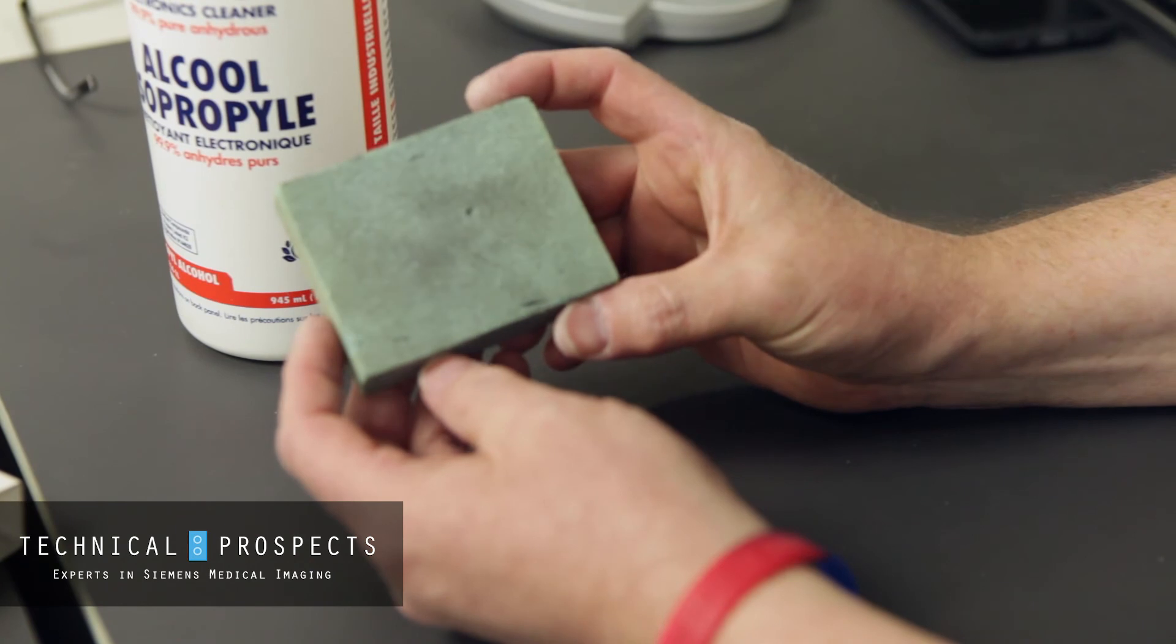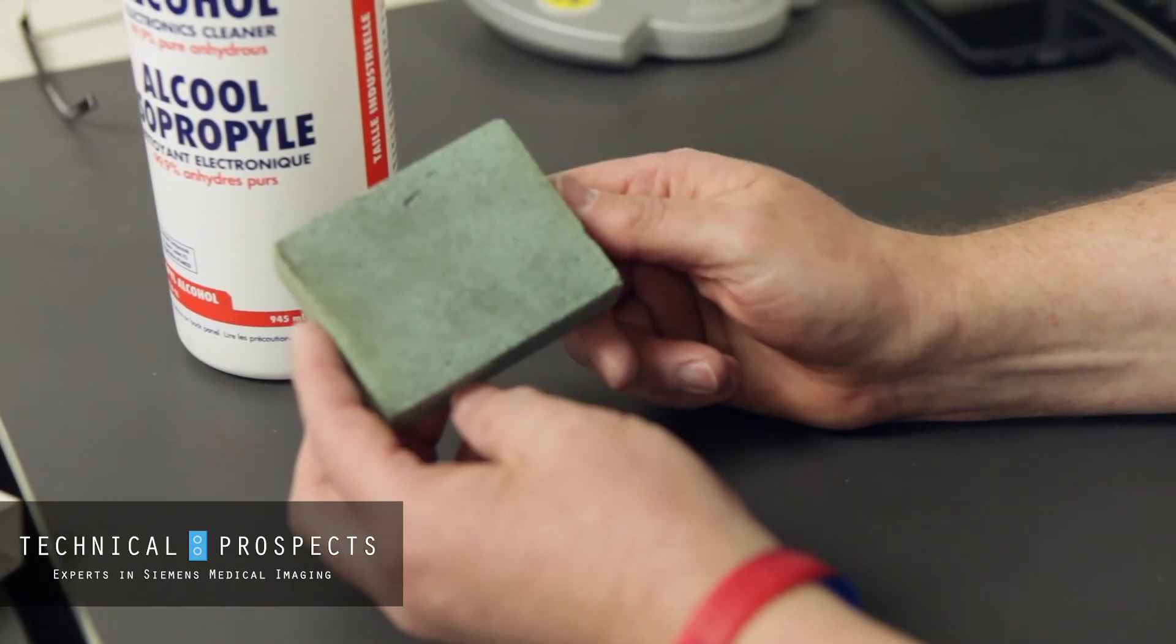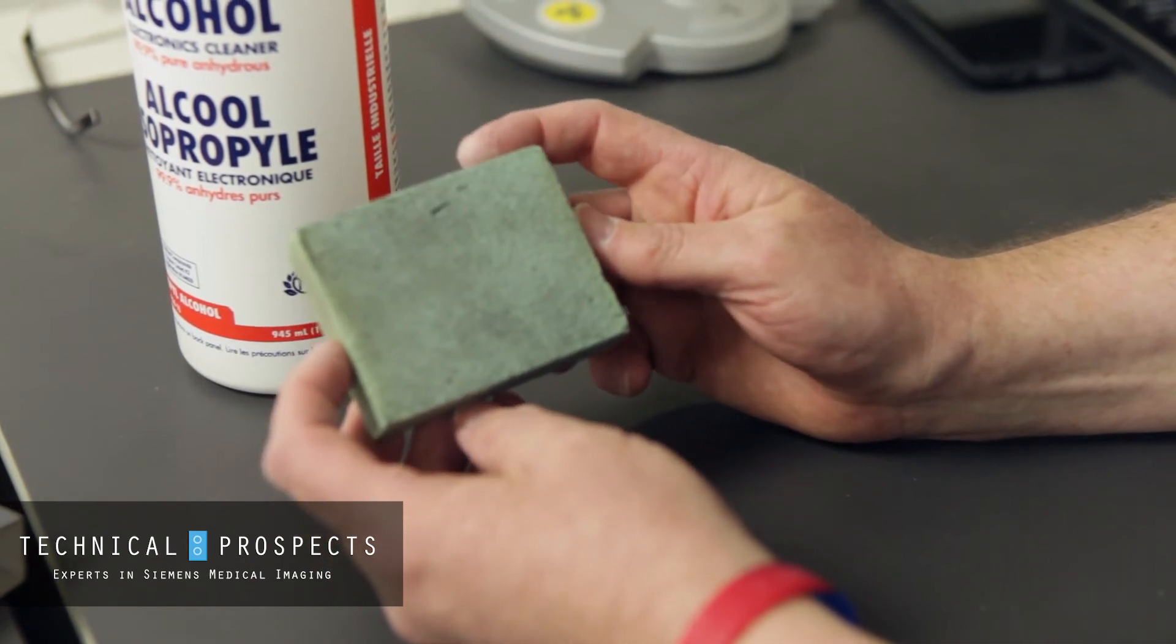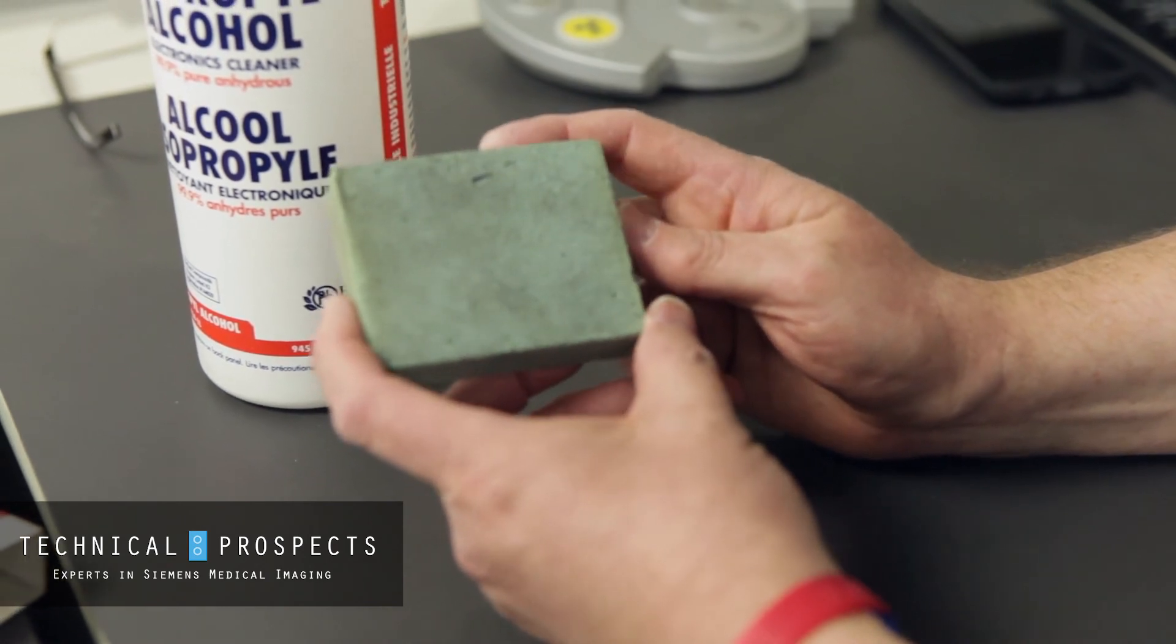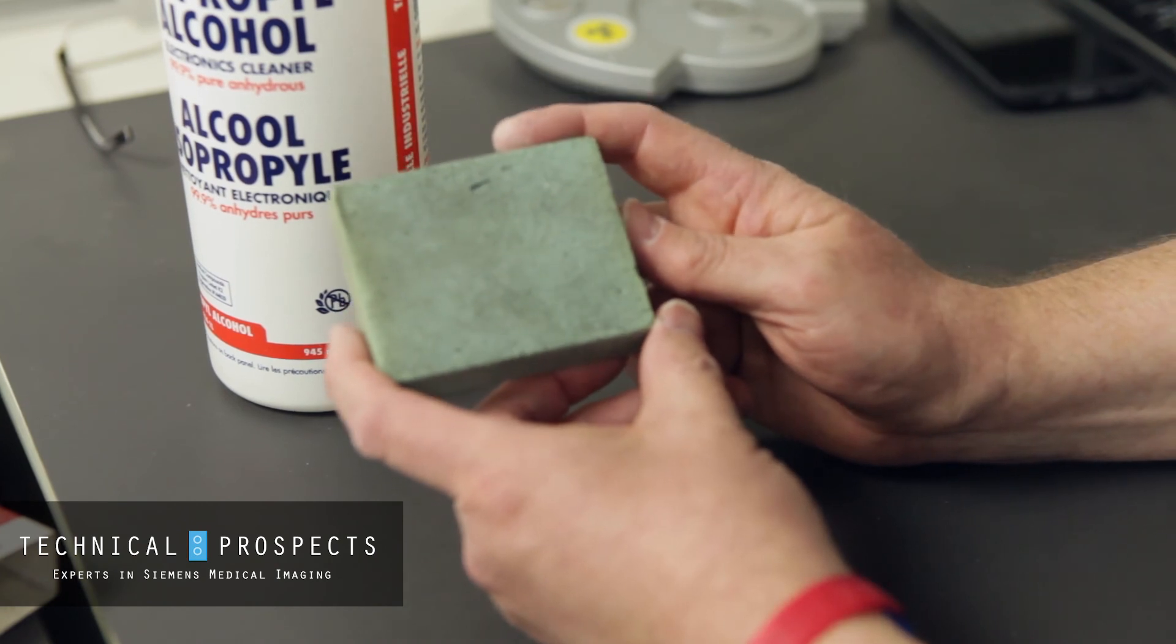Personally, I've been using this pad for several years. I've cleaned it multiple times and it's still very usable. It prolongs the life of your cleaning sponge and gives you more opportunity to continue to clean your slip ring without transferring materials.